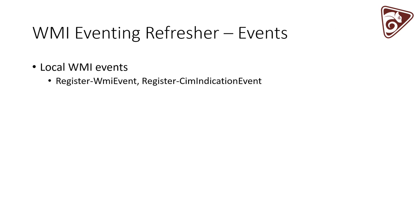Using PowerShell, there are really two ways to register WMI events. The first would be local events — using the older WMI cmdlets you would use Register-WmiEvent, and with the newer CIM cmdlets available in v3 and above, you would use Register-CimIndicationEvent. Most of the examples shown today will use the CIM cmdlets.